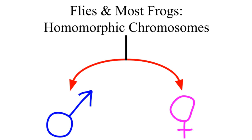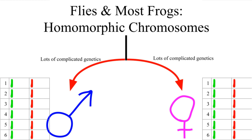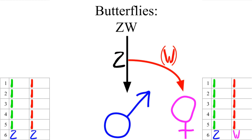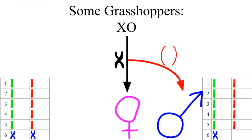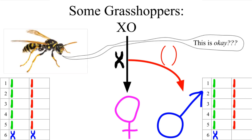Now, these systems both hinge on the idea that there's one default and one augmentation, but in flies and frogs they have homomorphic sex chromosomes. The genetic information for determining sex is scattered throughout the entire genome and can't be determined at a glance. Butterflies are similarly ZW, except the females have an empty space instead of a unique chromosome, called ZW0. Grasshoppers and some other animals have X0. You can have an absence of a chromosome as a genotype?